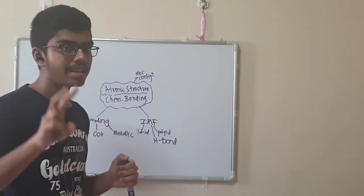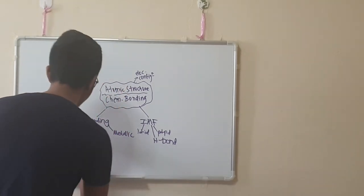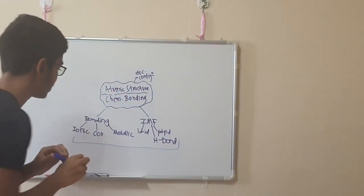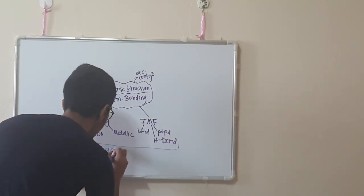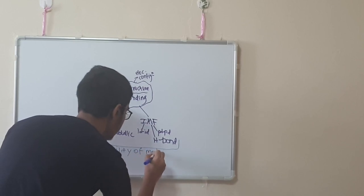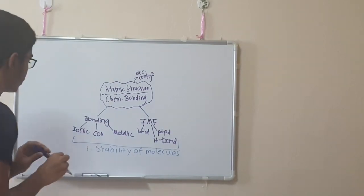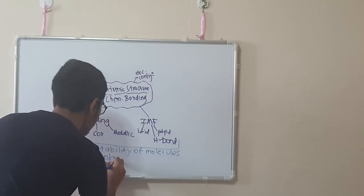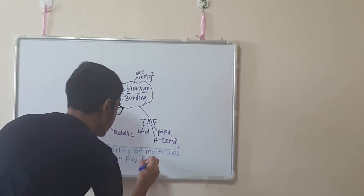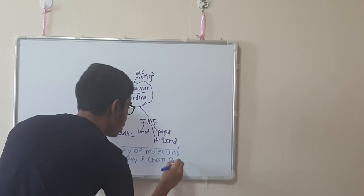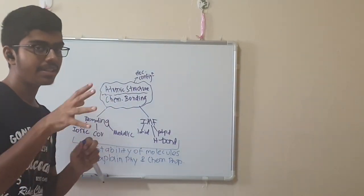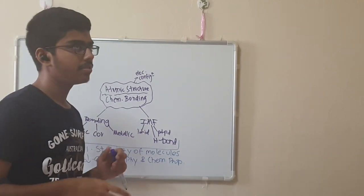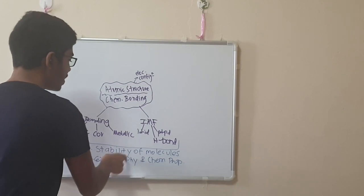These two topics — atomic structure and chemical bonding — explain two very important things for your exams. Number one is the stability of molecules, which relates to molecular geometry. Number two is the explanation of physical and chemical properties, which is very important for comparison questions.